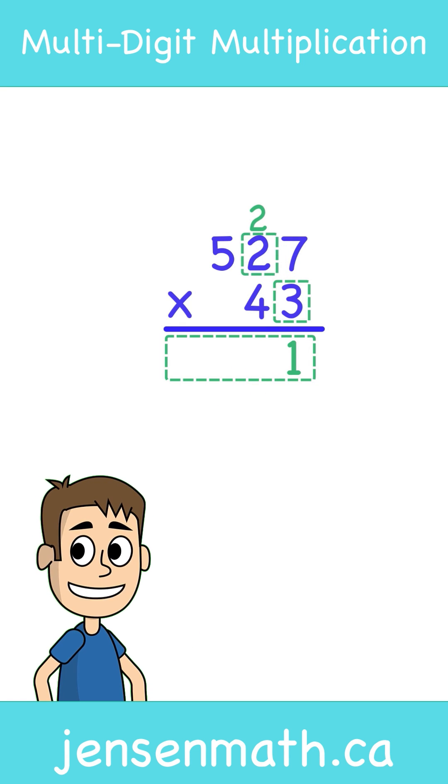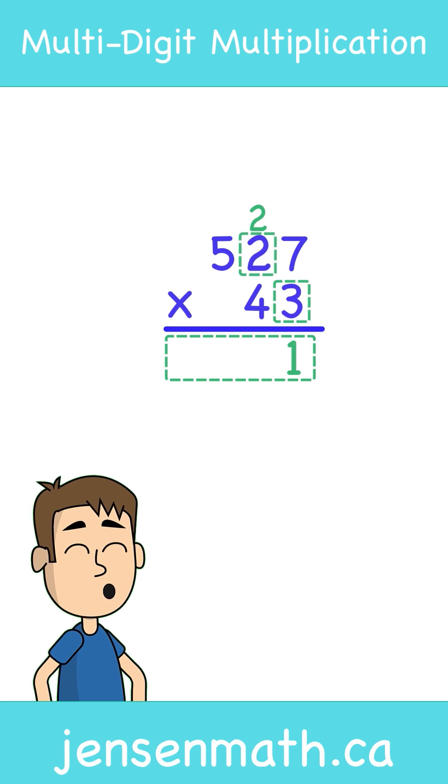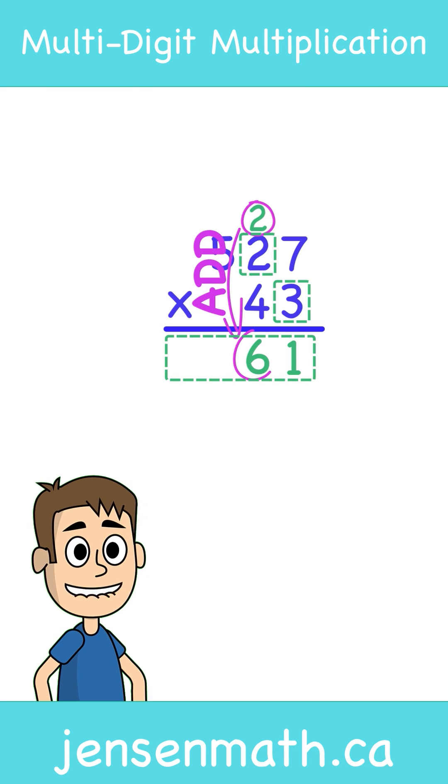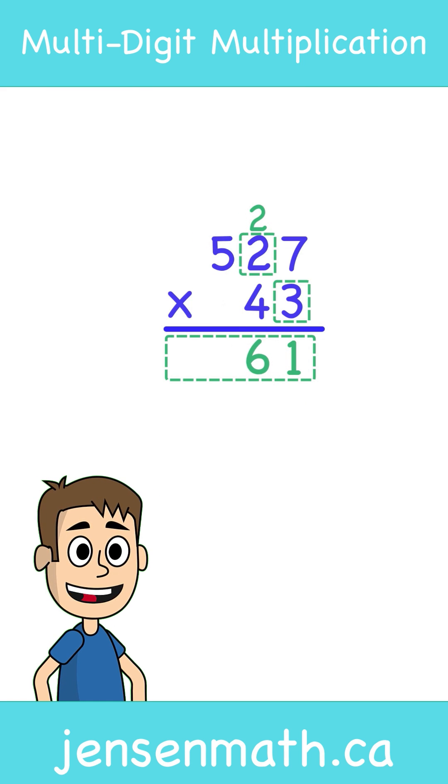Now we multiply 3 by the next digit in the top number. 3 times 2 is 6. But we must also add the 2 that was carried from our previous multiplication. 6 plus 2 is 8.